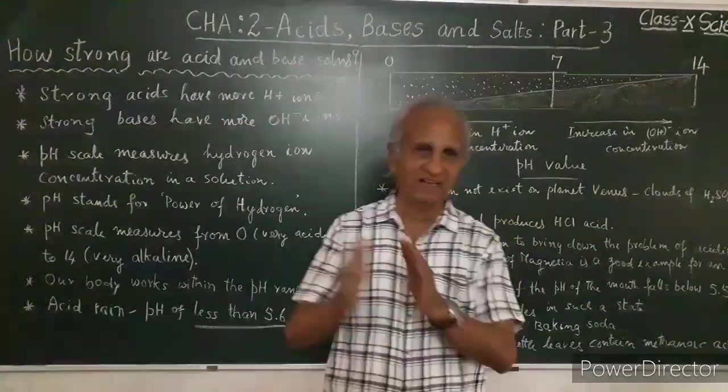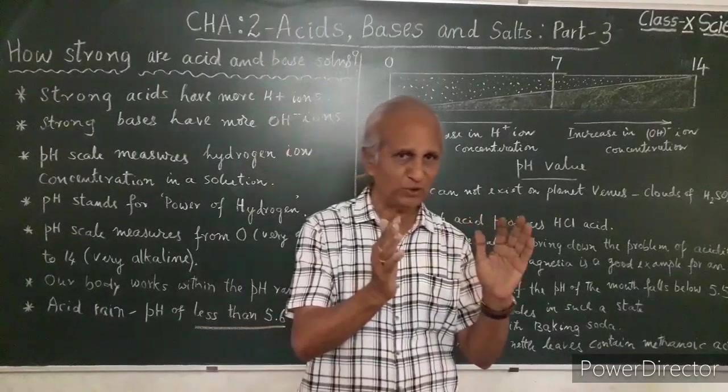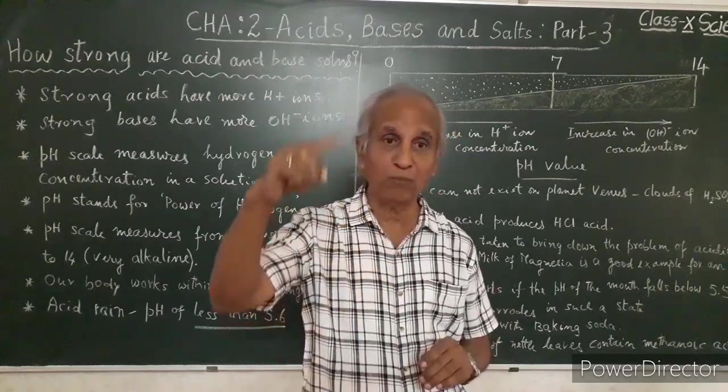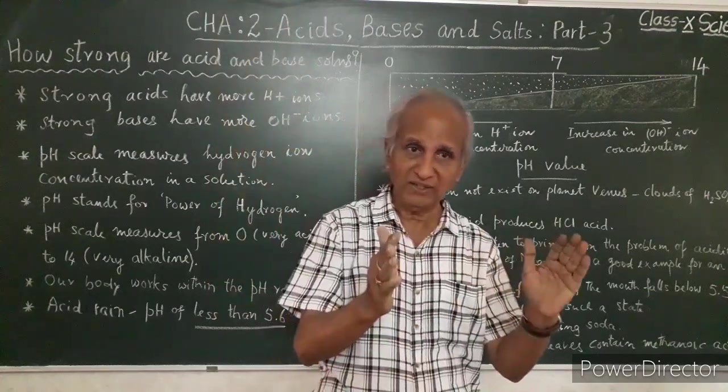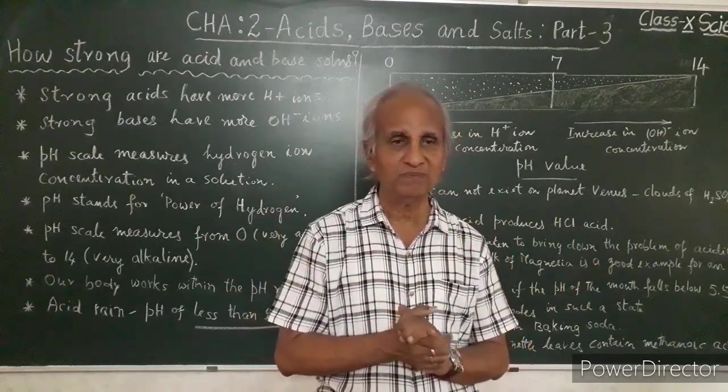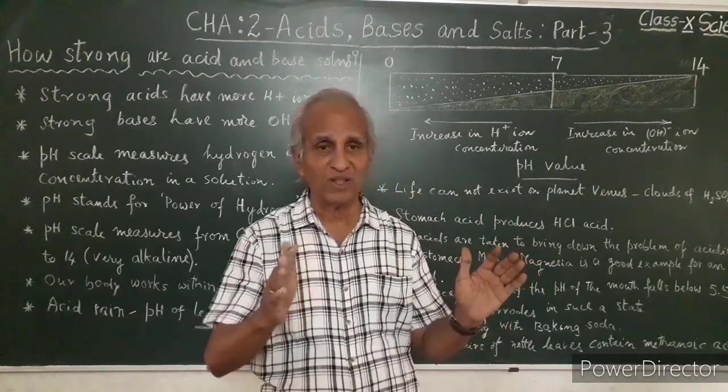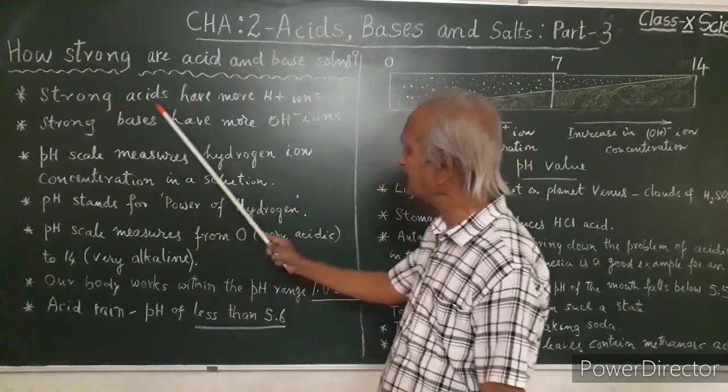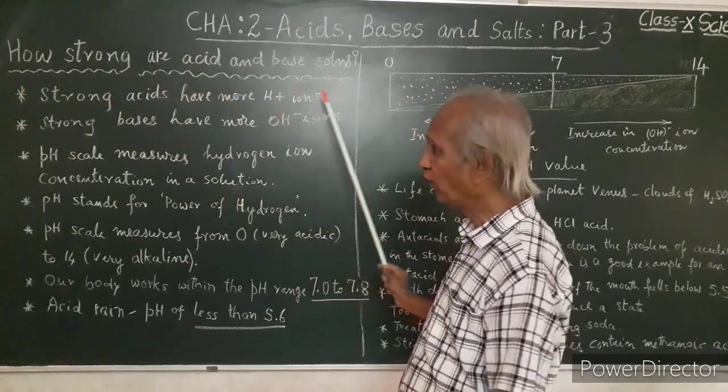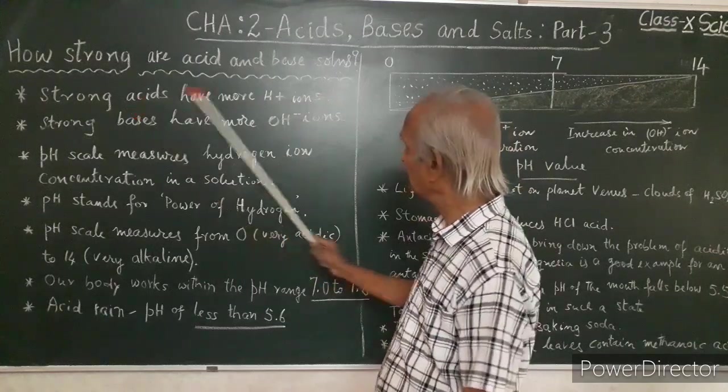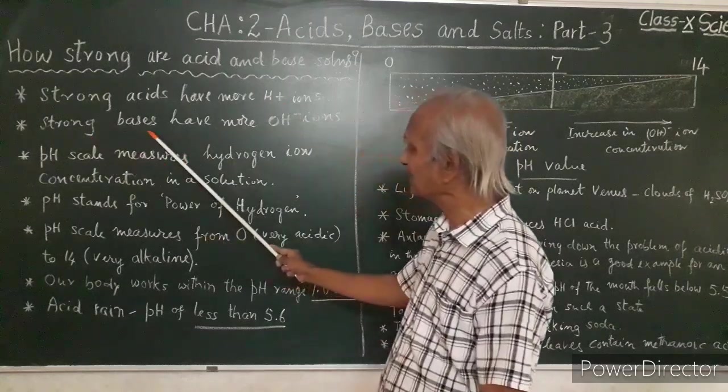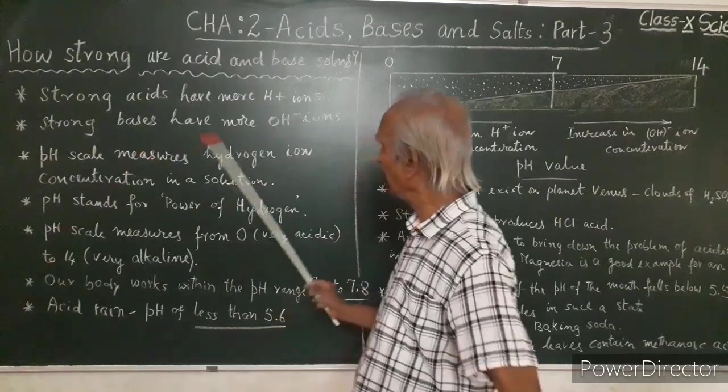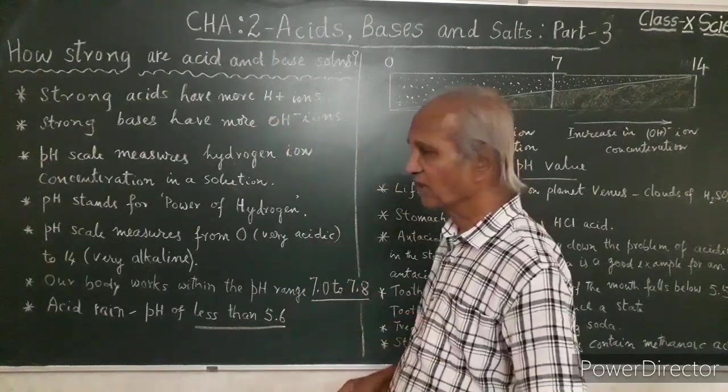How strong are acid solutions and base solutions? Acid solutions tend to be very strong when H plus ions or hydrogen ions are more and more in number. Alkaline solutions tend to be strong when hydroxyl ions go on increasing. Strong acids have more hydrogen ions, for example battery acid. Strong bases have more OH minus ions, say sodium hydroxide concentrated.